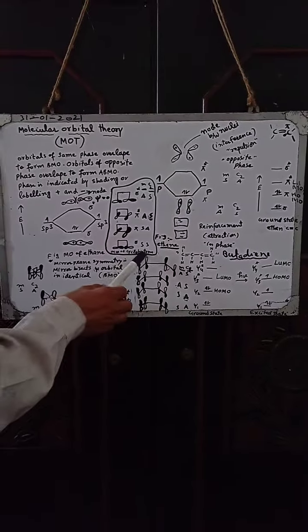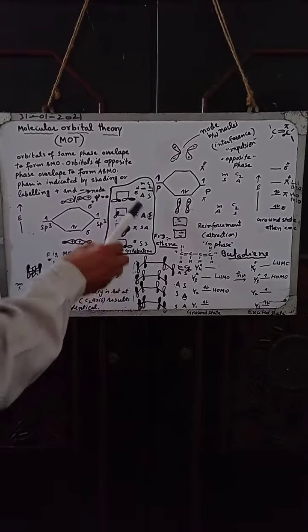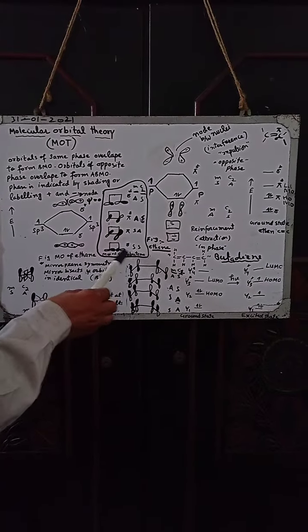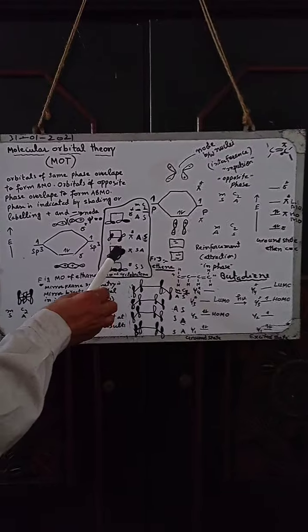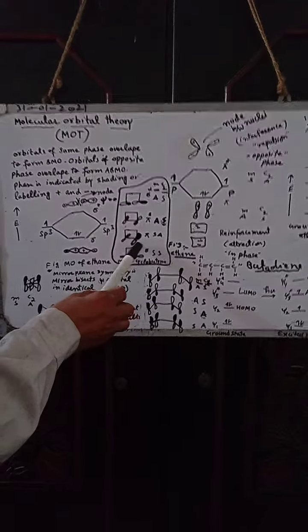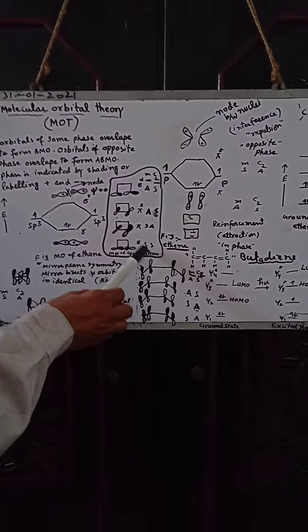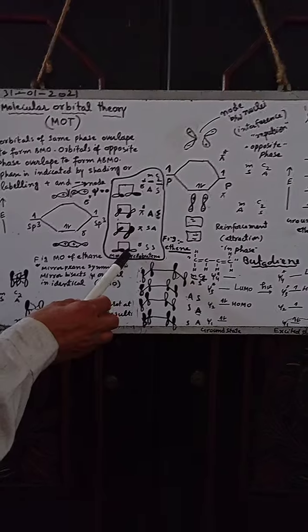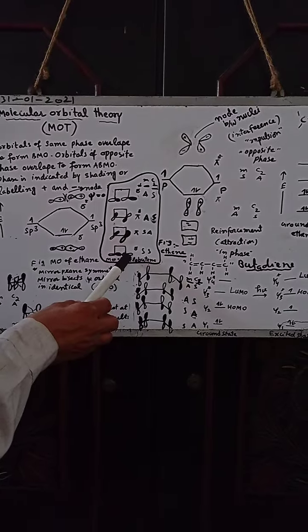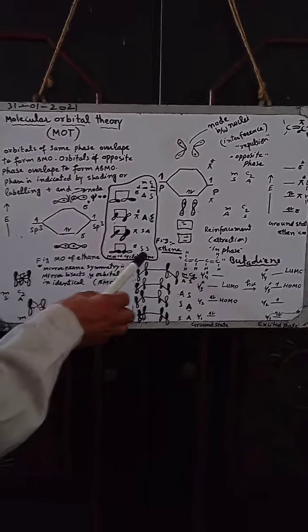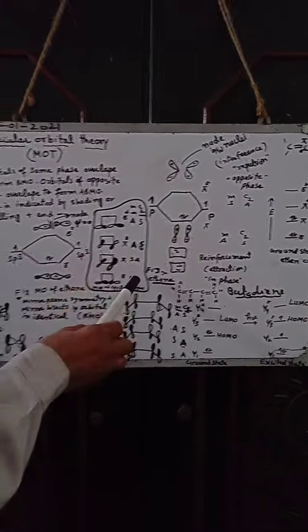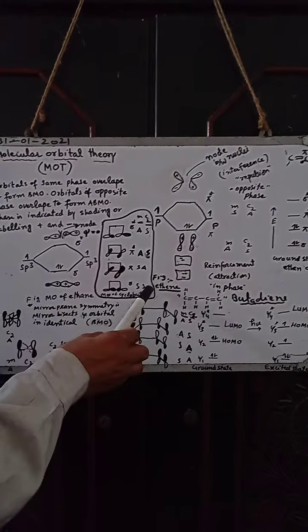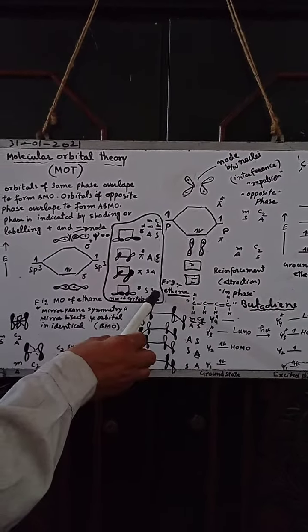Bismillahirrahmanirrahim. This is cyclobutene. Cyclobutene has sigma bonds and one pi bond. The sigma orbital — two orbitals overlap in the same phase linearly. Sigma is mirror plane symmetrical, and the C2 proper axis of symmetry is also symmetrical.